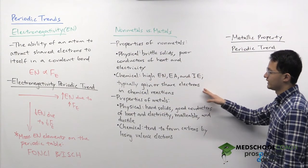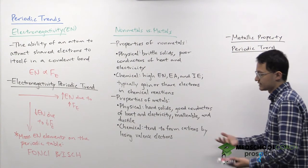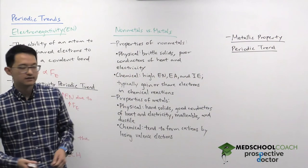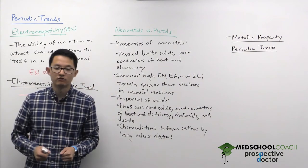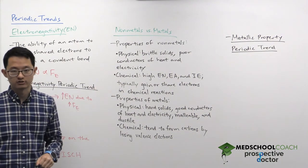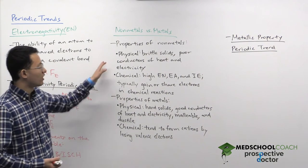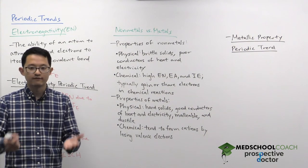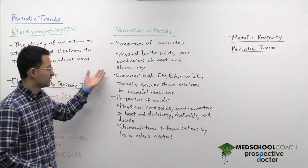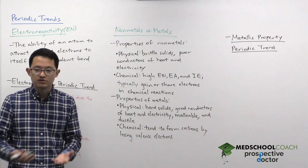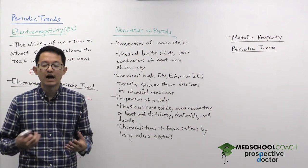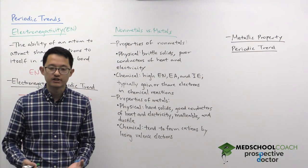Our last trend is metallic character, essentially looking at the difference between nonmetals, metals, and everything in between. For the MCAT, you need to know the difference in chemical and physical properties between metals and nonmetals. Nonmetals are brittle solids that are poor conductors of heat and electricity. If you apply forces to them, they're just going to break apart. In terms of chemical properties, nonmetals have very high electronegativity, ionization energy, and electron affinity.